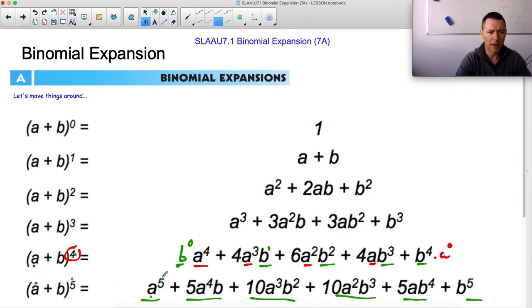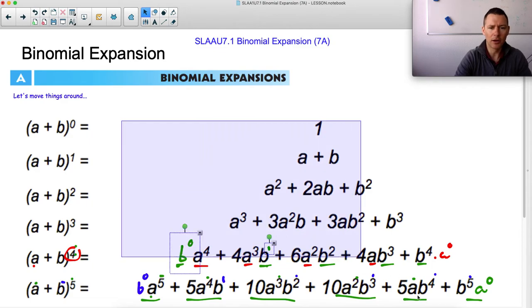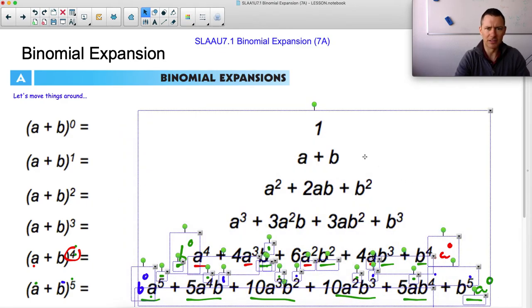And they all play the same game. a starts out to the maximum exponent. And then a decreases. Three, two, one, zero. b to the zero. And b starts out at zero and goes b to the first, b to the second, b to the third, b to the fourth, b to the fifth. That's all great. I understand that. What up with the other weird little numbers in there? Take a look-see.